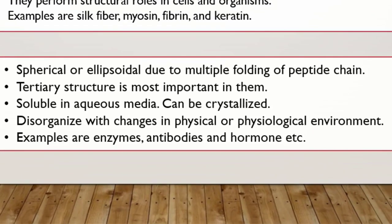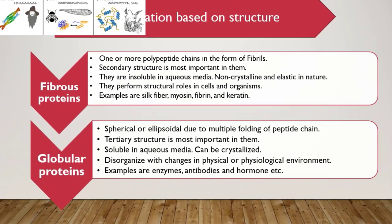Next ہمارے پاس ہیں globular proteins. ان proteins کے اندر peptide chains multiple folding کرتے ہوئے spherical یا ellipsoidal structure دیتی ہیں. ان کے اندر most important tertiary structure ہوتا ہے. Aqueous media میں soluble ہوتی ہیں اور انہیں crystallize کیا جا سکتا ہے under specific conditions. اگر physical یا physiological environment میں change ہو جائے تو یہ proteins disorganized ہو جاتی ہیں. ان کی examples میں enzymes، antibodies اور hormones آ جاتے ہیں.